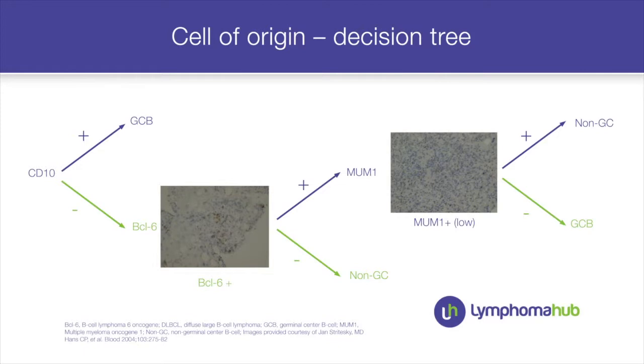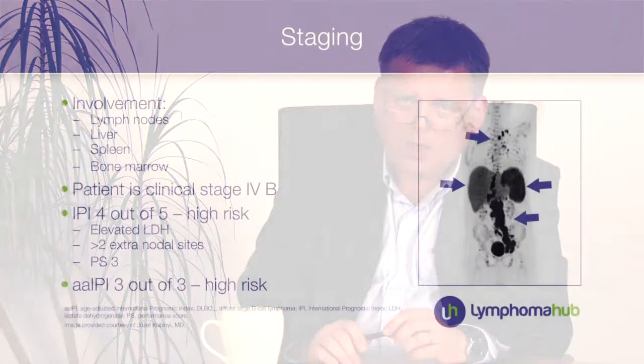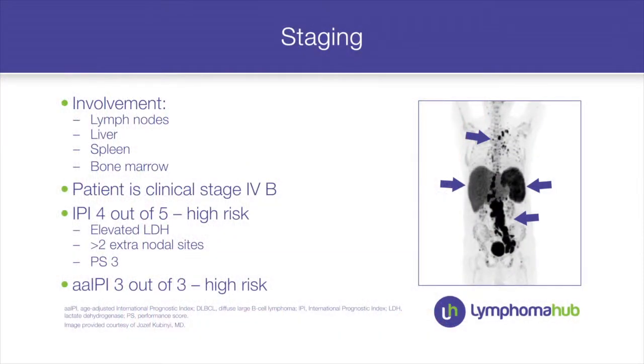Diffuse large B cell lymphoma is definitely not a homogeneous disease — it is a group of diseases. The most frequent method of discrimination is cell of origin using immunohistochemistry, based on the Hans algorithm published almost 10 years ago. We performed CD10, BCL6, and MUM1 staining, and based on these findings we concluded that the patient has a non-GC subtype of DLBCL.